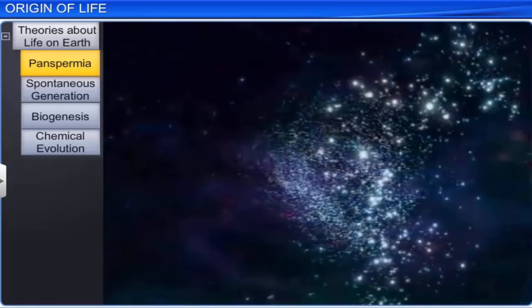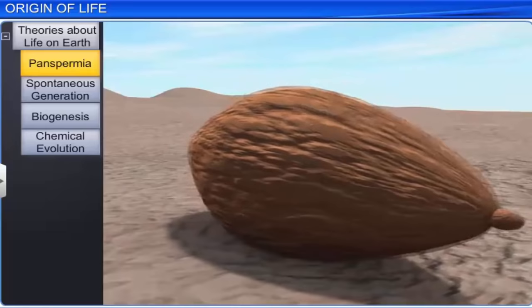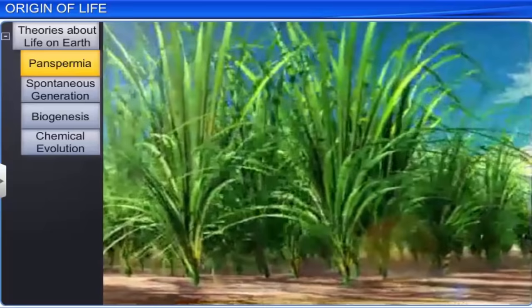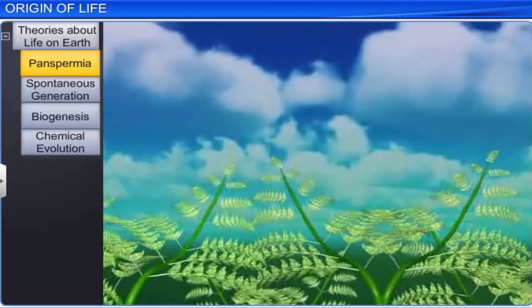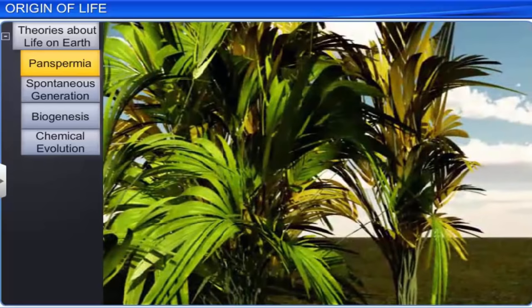Panspermia is the oldest theory, founded by Greek thinkers. It explains that units of life called spores were transferred to different planets. Panspermia assumes that seeds of life exist all over the universe. Therefore, the life on earth may have originated after one such seed was deposited on the earth from somewhere in the universe. This theory generates much interest even today.